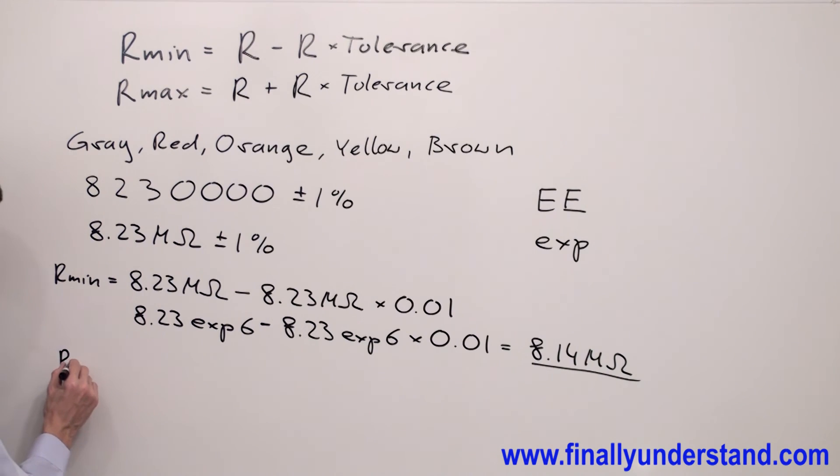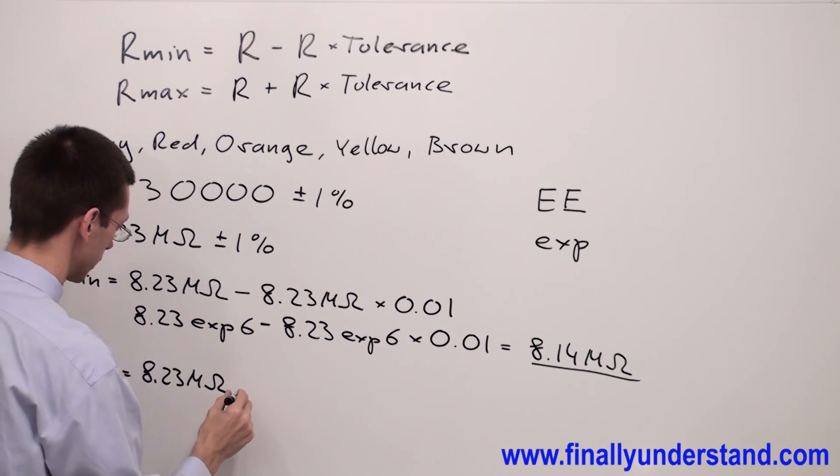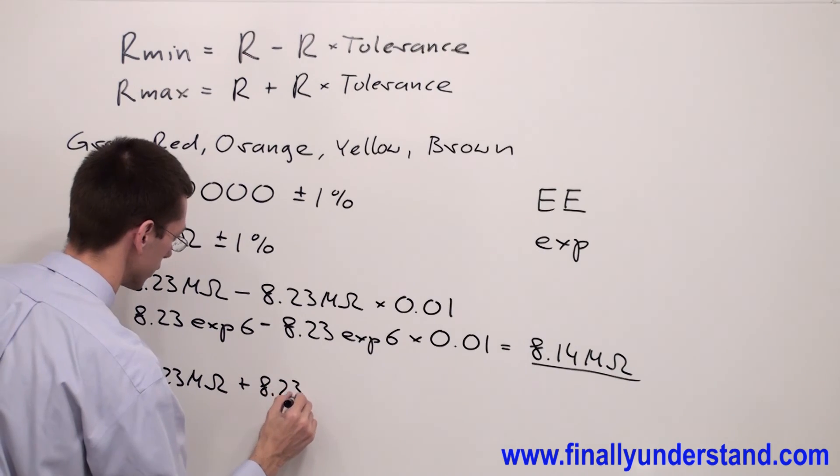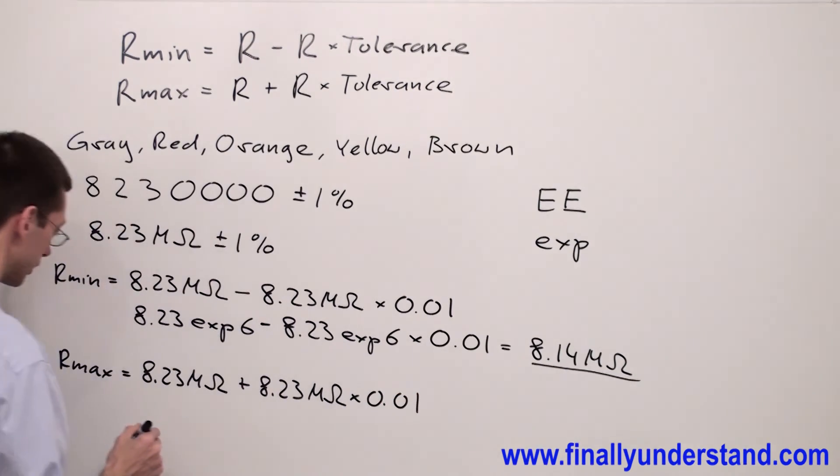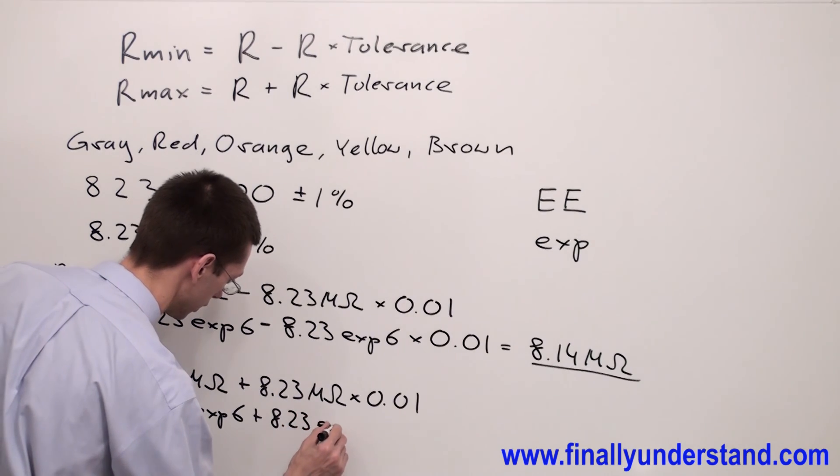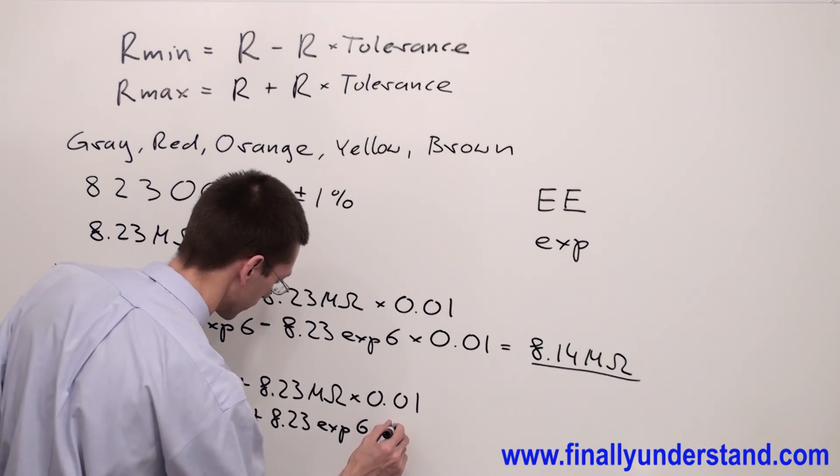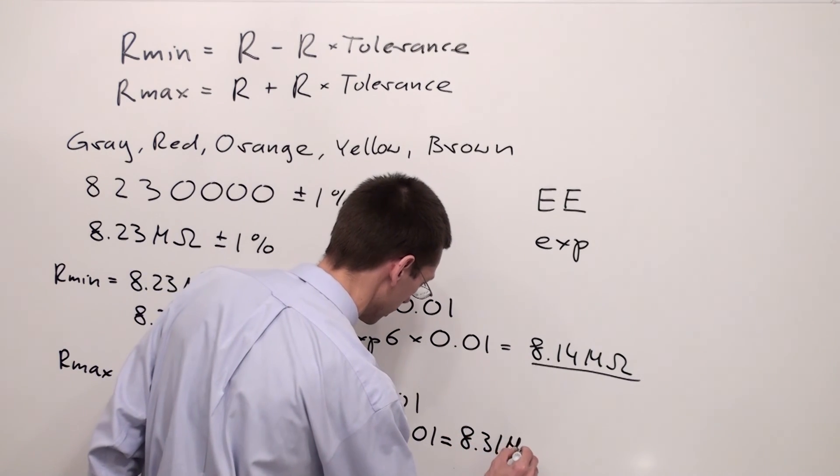R max equals again the nominal value 8.23 mega ohms plus 8.23 mega ohms times 0.01. Let's practice with the calculator. You press 8.23, then press the key EXP 6 because mega represents power of 10, 10 to the 6, plus 8.23 EXP 6 times 0.01, equals 8.31 mega ohms.